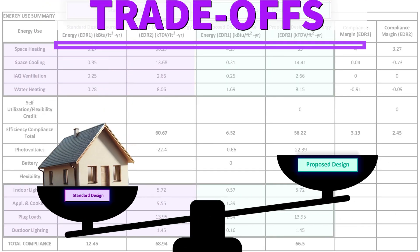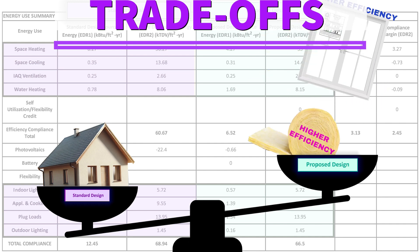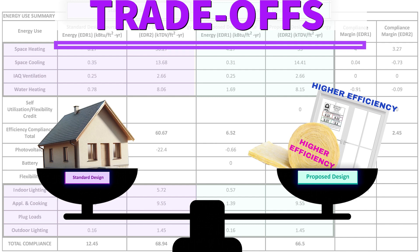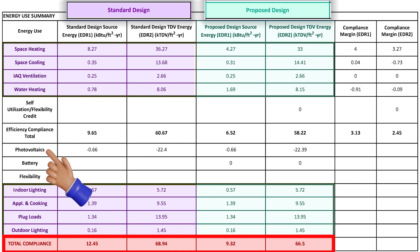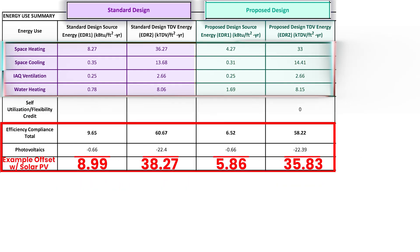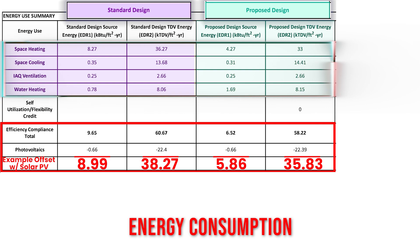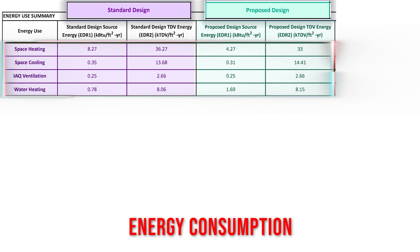Think of a negative number in the compliance margin like a gap you can fill. You can patch it up by improving other parts of your building to be more energy efficient. Ultimately, positive numbers or zeros in the total compliance row is what matters. This row takes into account the energy contributions from photovoltaic systems or any energy storage like batteries, which can offset energy consumption, as detailed in this top portion of the table.